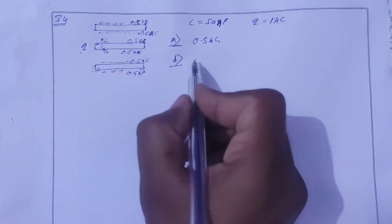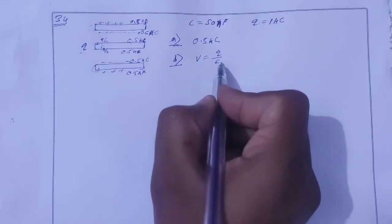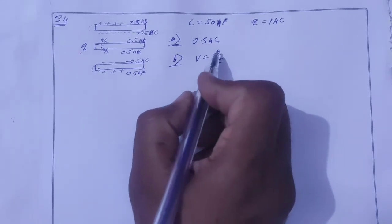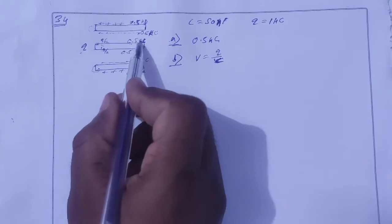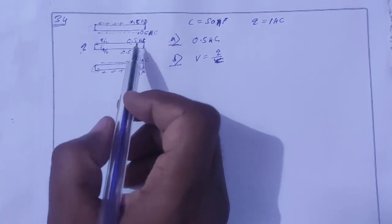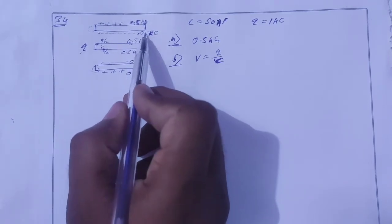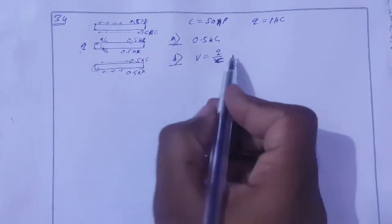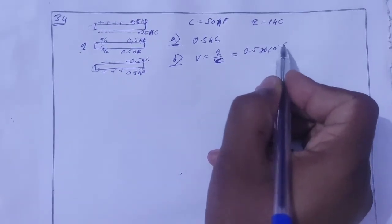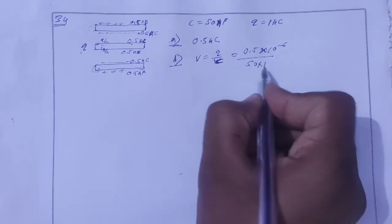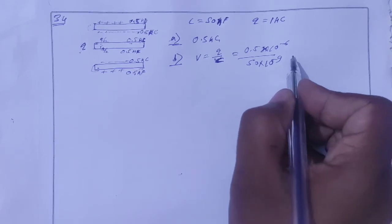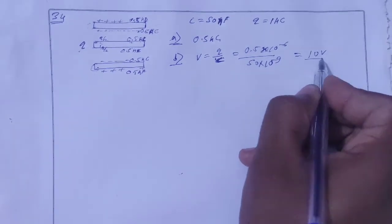For the potential difference, it is Q divided by C. Taking the charge as 0.5 microcoulomb and C as 50 nanofarad, the potential difference is 0.5 microcoulomb divided by 50 nanofarad, which gives 10 volts.